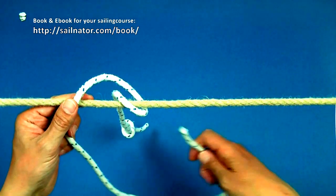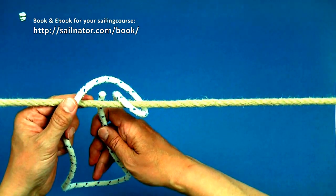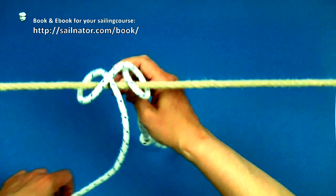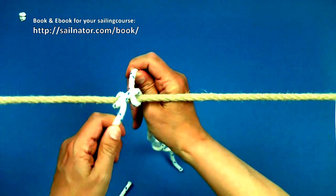Now I stick the end of the line through this loop from below with the right hand and pull both parts of the line. Now the clove hitch is finished.